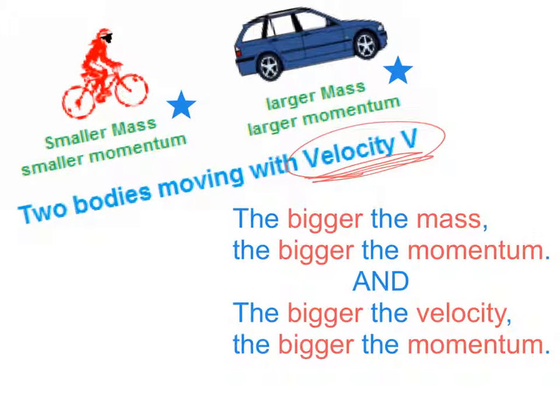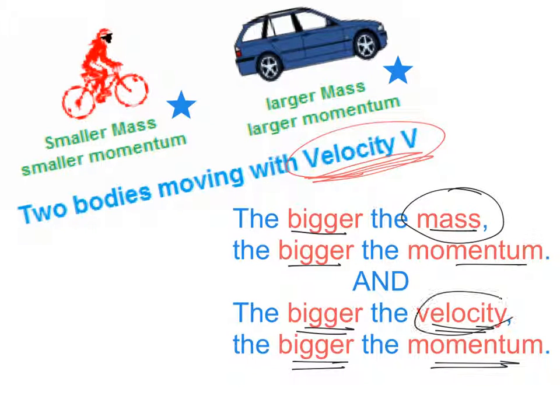Momentum changes with changes in mass, but momentum also changes with changes in velocity. As you can see, the bigger the mass of an object, the bigger the momentum. But also, the bigger the velocity of an object, the bigger the momentum, because mass and velocity multiplied together give an object its momentum.